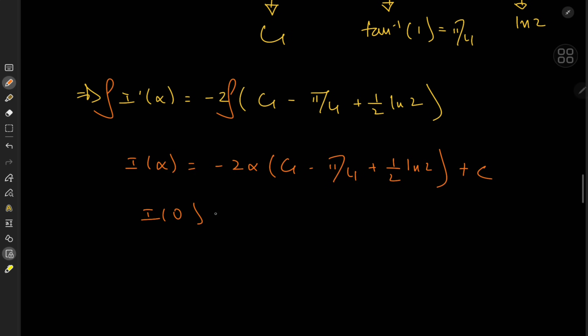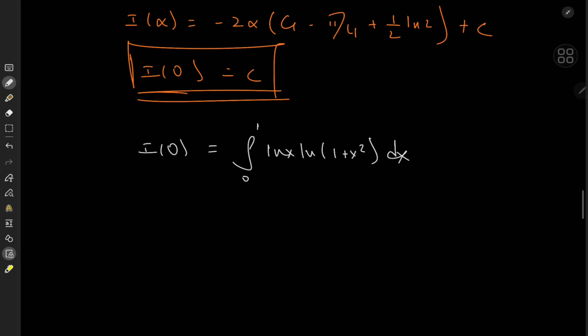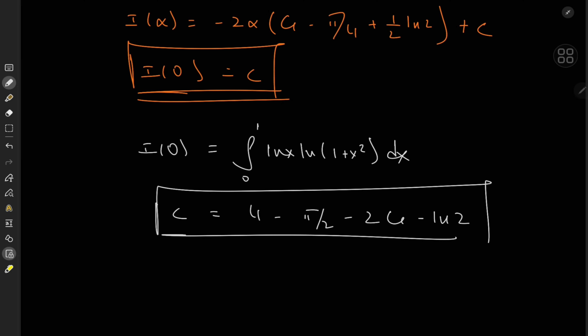That is indeed quite convenient because I can now integrate with respect to alpha to yield I(α) equals negative 2α times (G minus pi over 4 plus one half log 2) plus a constant of integration C. I(0) equals this constant C. Recall this was the side quest mentioned earlier — expanding the logarithm using its series yields I(0) equals 4 minus pi over 2 minus 2 times Catalan's constant minus log 2. I'll leave this as an exercise to the interested viewer.